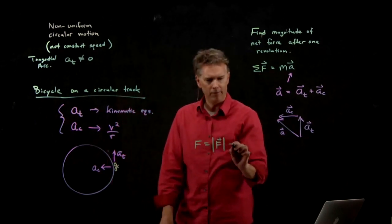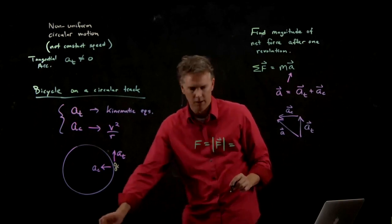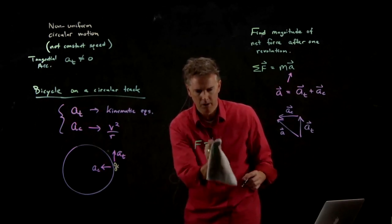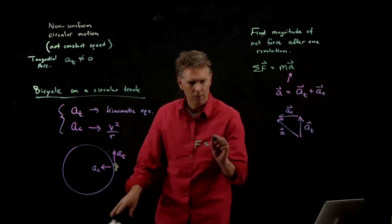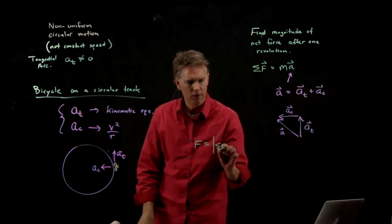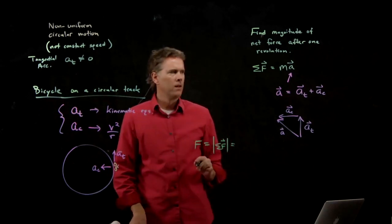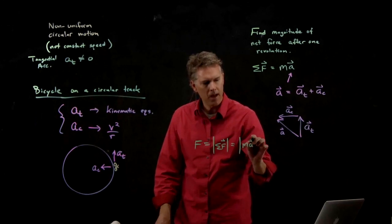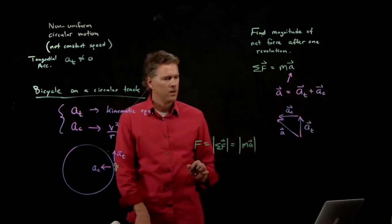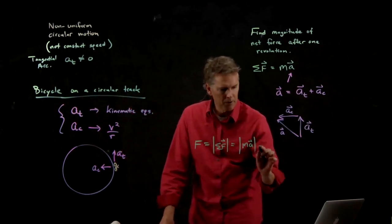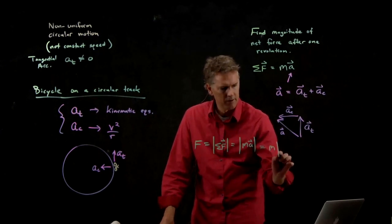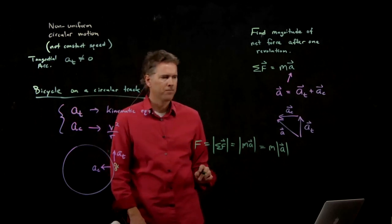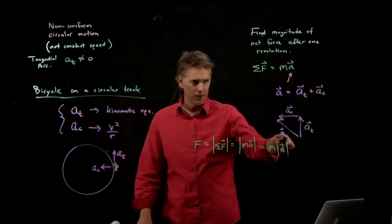The magnitude of F. Let's put that summation sign back in there so we're consistent with what we wrote earlier. So we have the magnitude of the net force. But that is the same as ma. And m, that's just a number so that comes out in front. And so I have m times the magnitude of a.